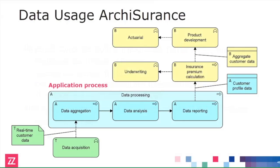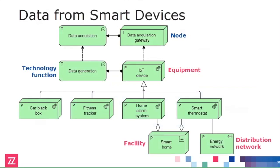Getting back to our insurance example, we see the upper layer of what they want to do. They want to use data in an analysis process in their application world, create customer profiles from that, feed those into the premium calculation, and also use that at an aggregated level to develop new products. Then moving into the physical world where this data acquisition takes place, they have defined a data acquisition gateway.